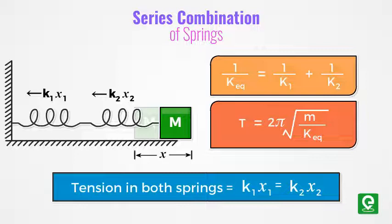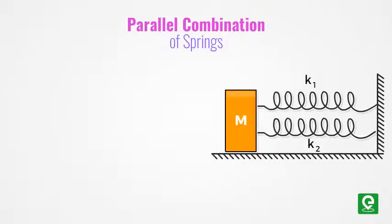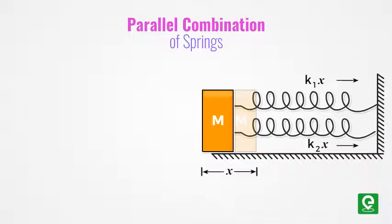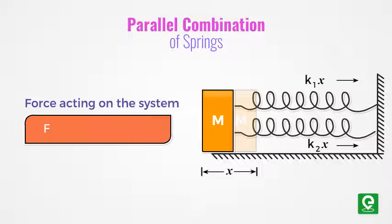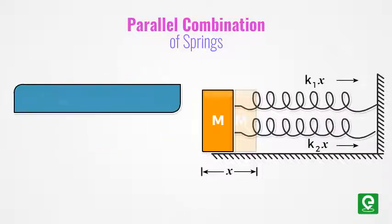Parallel combination of springs: when two springs are joined in parallel, the extension is same for both springs but tension force acting on the springs will be different. Force acting on the system is equal to -k1·x + k2·x.